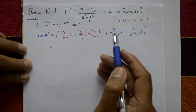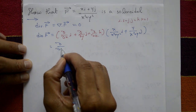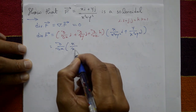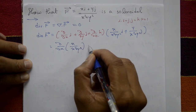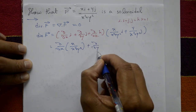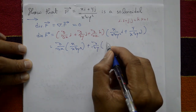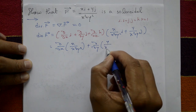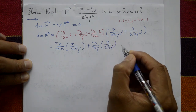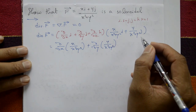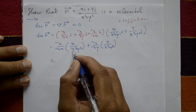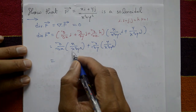Taking i·i: ∂/∂x of x/(x²+y²), plus j·j: ∂/∂y of y/(x²+y²). There is no k term.